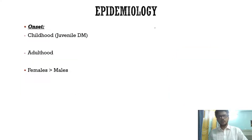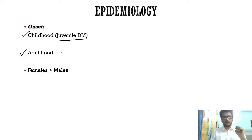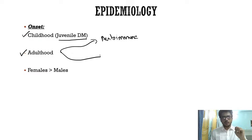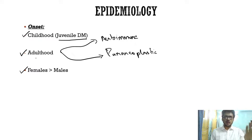Coming to the epidemiology: dermatomyositis can occur both in the pediatric as well as adult age group. When it happens in childhood it is known as juvenile dermatomyositis. In adulthood it can be due to two important reasons — number one, it can be an autoimmune phenomenon, and number two, it can be a paraneoplastic phenomenon.